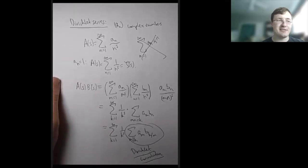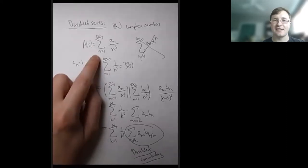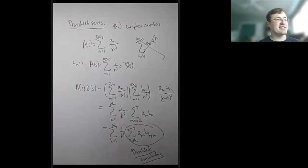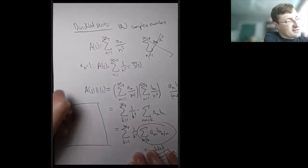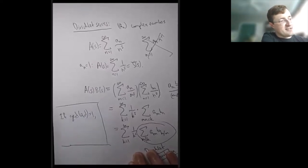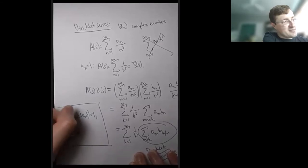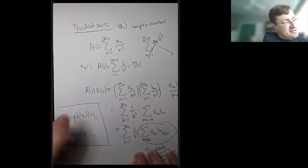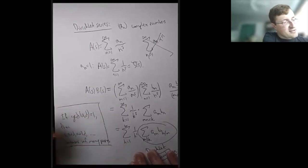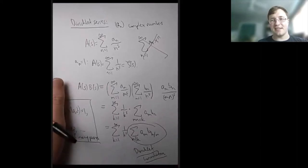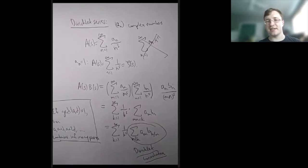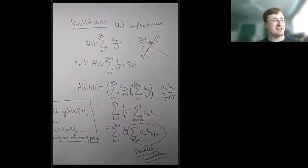Probably the most well-known example is that Dirichlet used these sorts of things along with something called Dirichlet characters to prove that any arithmetic progression contains infinitely many primes, as long as the common difference and the first term are relatively prime — so they have no common factors. So if you start with two positive integers a and d, then a, a+d, a+2d, and so on contains infinitely many primes. I'm hoping to make a video on that later, explaining where that comes from and what the essential steps are.